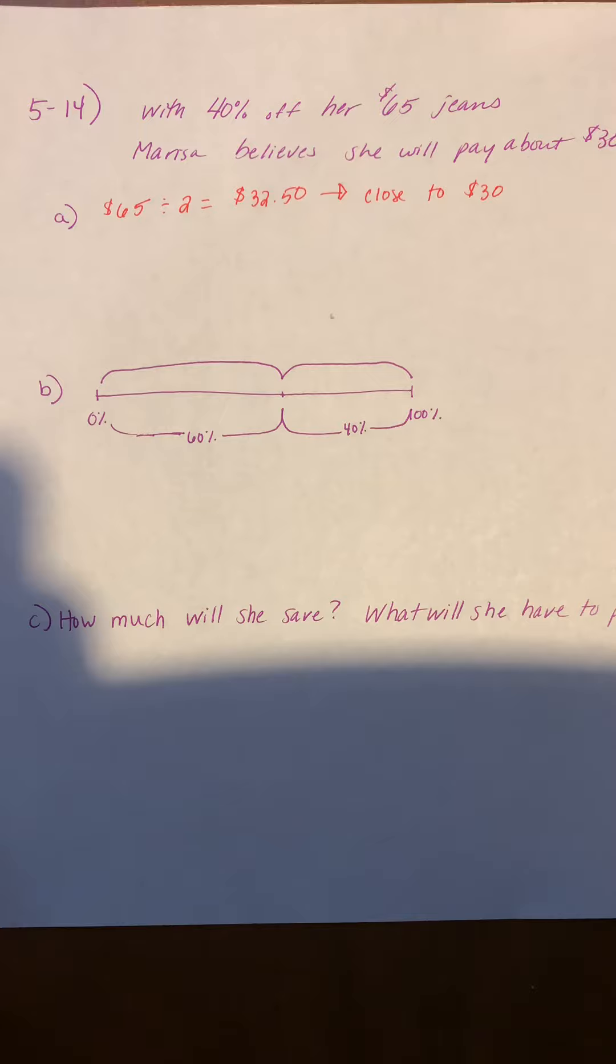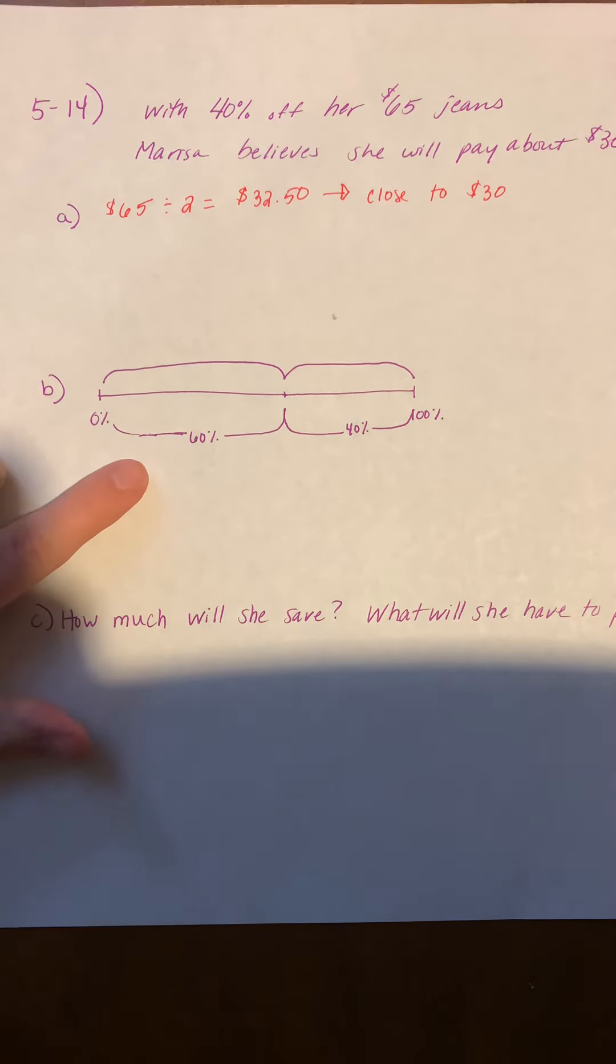So 50% is going to be close to $30, but we want to know exactly how much that discount is going to be for her. And then from there, we can find out how much she actually has to pay. So my next step is to find the answer. We're going to be using the diagram below.